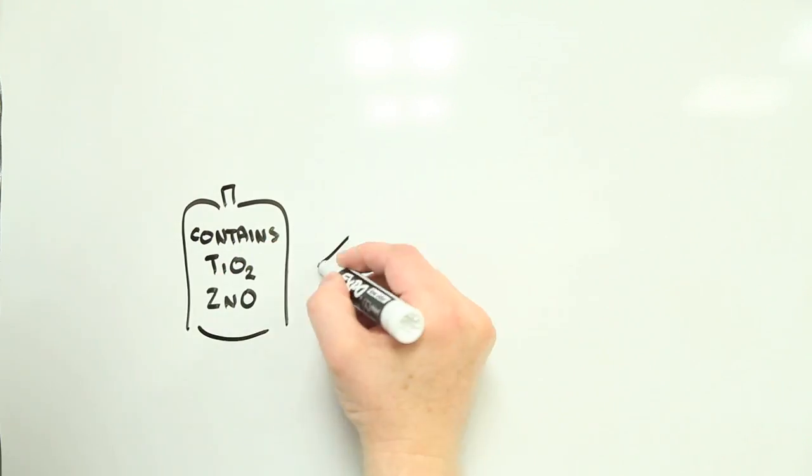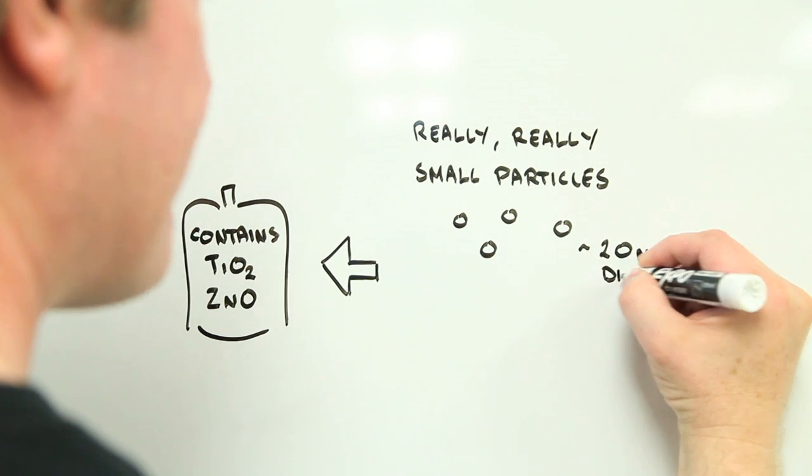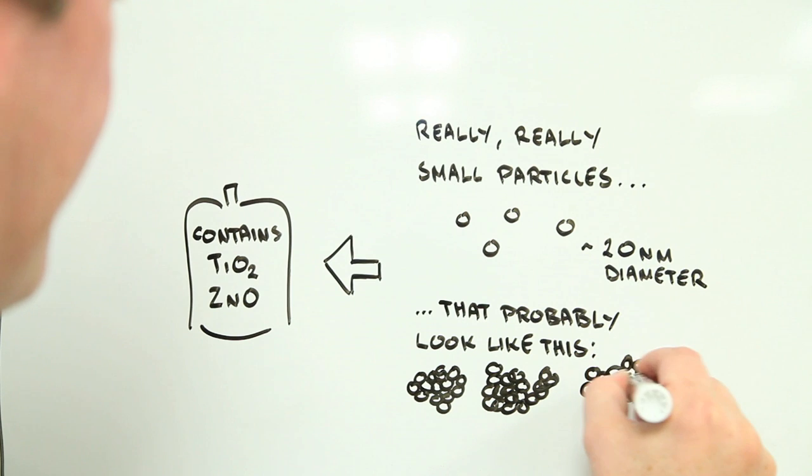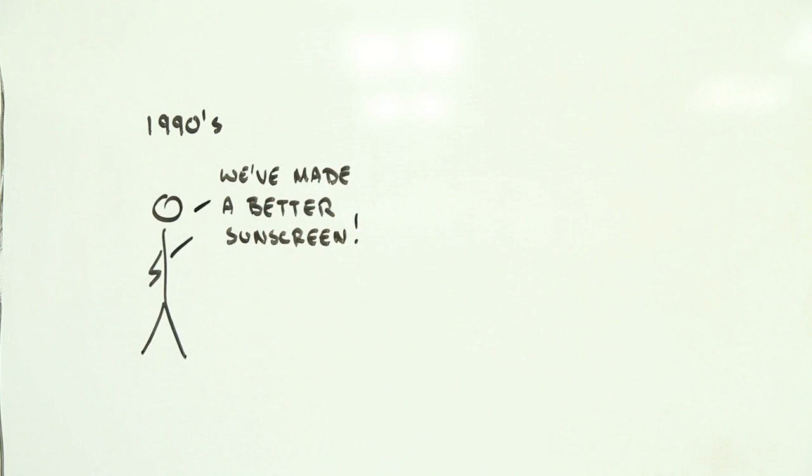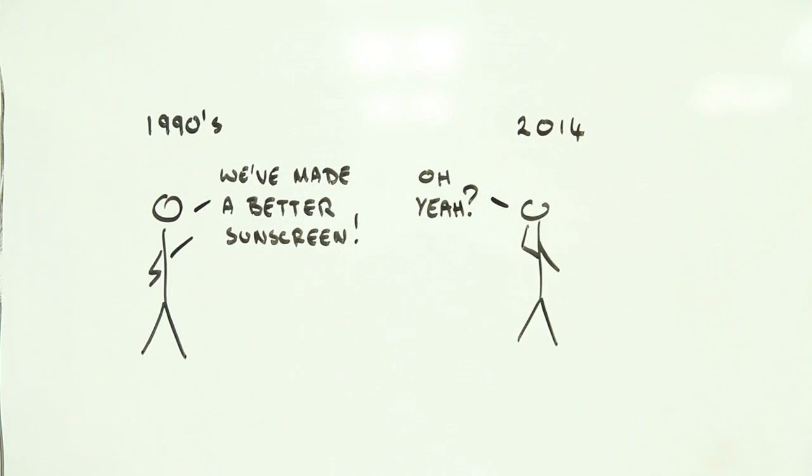Nanoparticle sunscreens use microscopically small particles of zinc oxide or titanium dioxide. You can usually tell if a sunscreen uses nanoparticles because it lists one or both of these materials on the label. Companies have been using these substances for a decade or so now, claiming that they make for a better sunscreen. But for some users, there are lingering doubts about their safety.